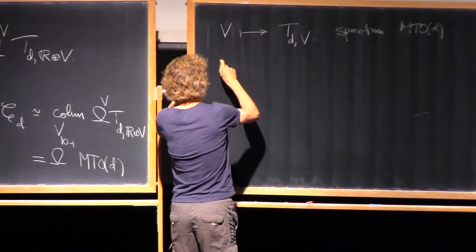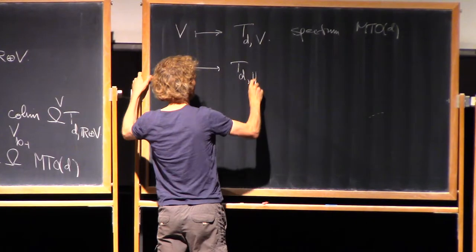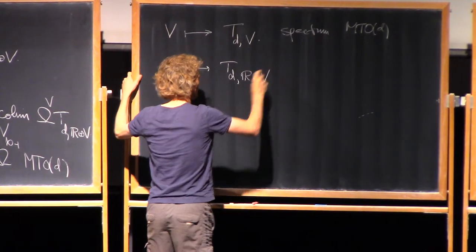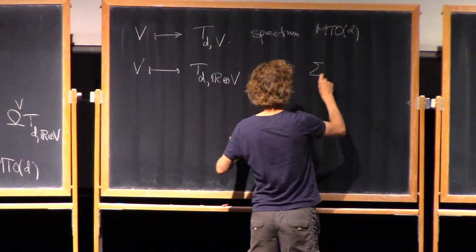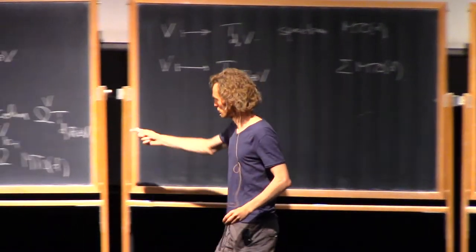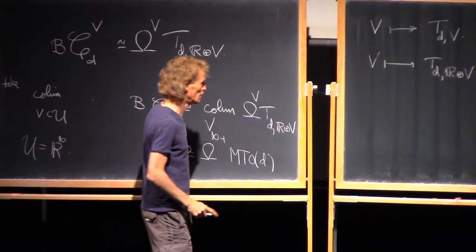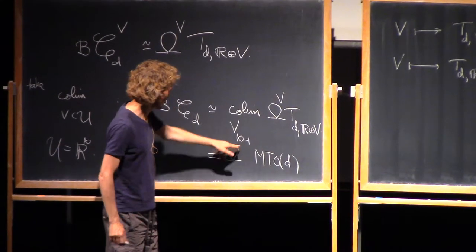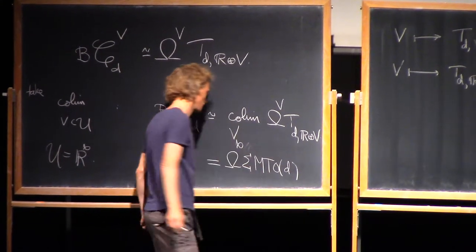If you pre-compose with direct summing with R, that's the suspension of that spectrum. And then this operation taking v for loop space and taking co-limit is called loops infinity. And this minus one is also known as suspension.